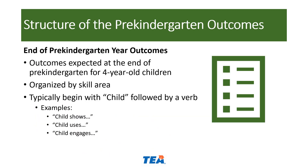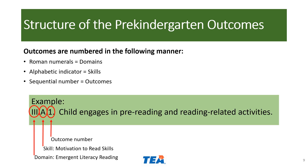The end of Pre-Kindergarten year outcomes are the outcomes expected at the end of a Pre-Kindergarten program for four-year-old children. The outcomes are organized by skill area and typically begin with the word 'child' followed by a verb — for example, 'child shows,' 'child uses,' or 'child engages.' The outcomes are numbered with a Roman numeral, followed by a letter, and then a number. The Roman numeral indicates the domain, the alphabetic indicator refers to the skill area, and the number indicates the outcome, numbered sequentially within each skill area.